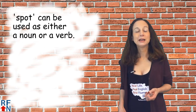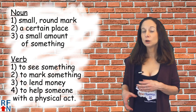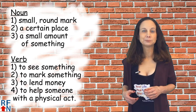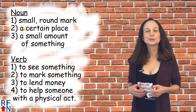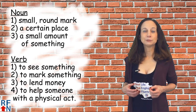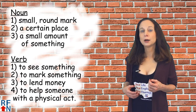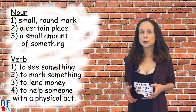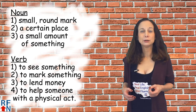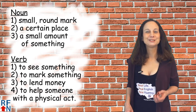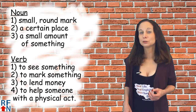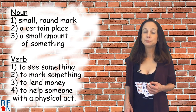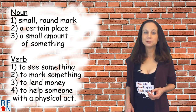As a noun, 'spot' can mean a small, usually round mark on something — for example, a stain. Ladybugs have spots and so do some animals, but usually it refers to something you don't want, like a spot on your clothes. It can also mean a particular place or point, as in 'this might be a good spot to rest for a while.'